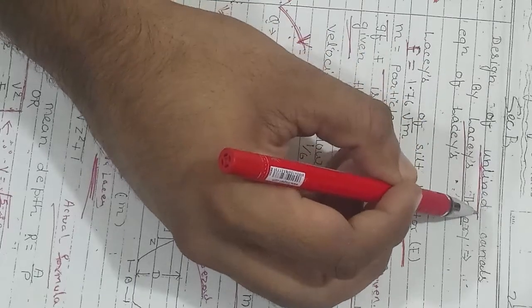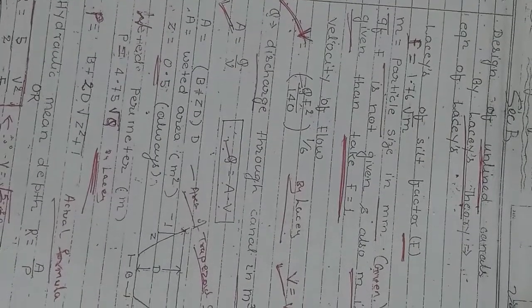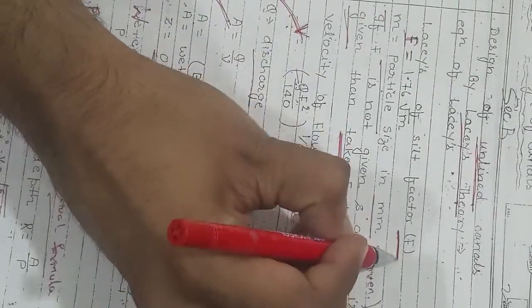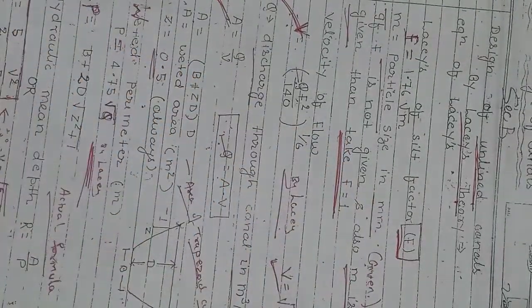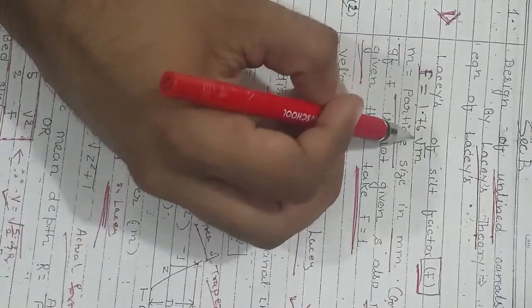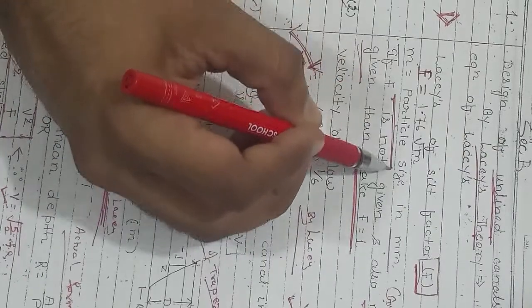Few formulas Lacey has derived are as follows. Lacey has given an equation for silt factor F: the formula is F = 1.76√m, where m is the particle size in mm which will be given to you. If m is not given, then directly take F = 1.